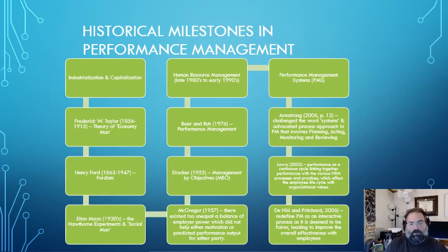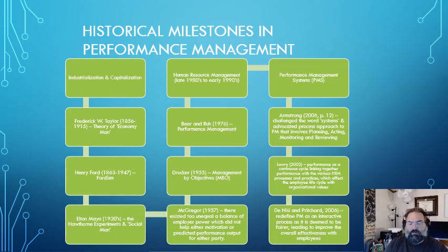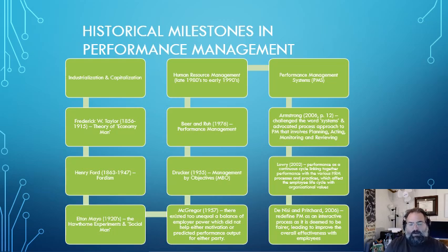Human resource management from the late 1980s to early 1990s brought performance management systems (PMS). Then Armstrong around 2006 challenged the word 'systems' and advocated a process approach to PM that involves planning, acting, monitoring, and reviewing. Lowry around 2002 defined performance as a continuous cycle linking performance with various HR processes and practices affecting the employee life cycle with organizational values. Denisi and Pritchard in 2006 redefined performance management as an interactive process deemed to be fair, leading to improved overall effectiveness of the employee.